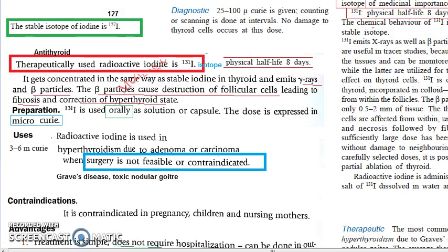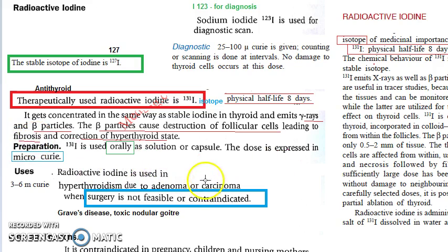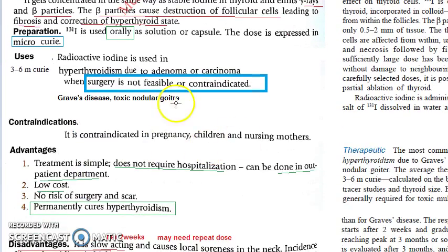This topic is very, very important. To summarize: the stable isotope of iodine is 127, iodine 123 is used for diagnosis, and iodine 131 gives the antithyroid effect. It emits gamma rays and beta particles — the beta particles destroy follicular cells causing fibrosis. Use it only when surgery is not possible. It is convenient — given orally with no hospitalization needed. Do not give to pregnant women, children, or young adults — the guideline states below age 25, do not give it.